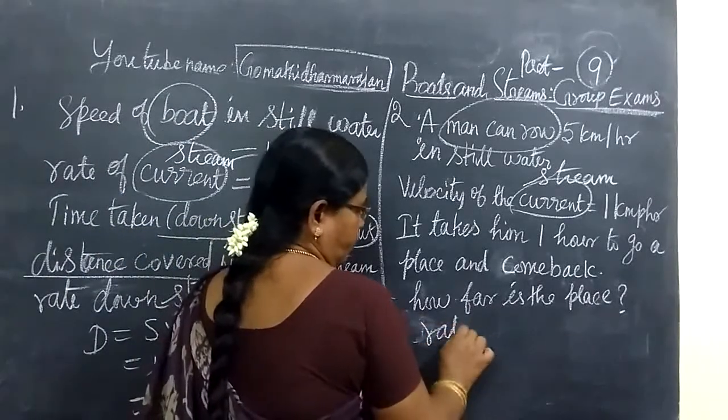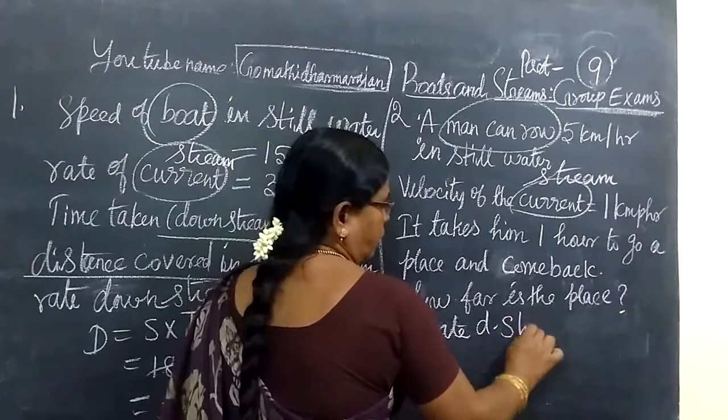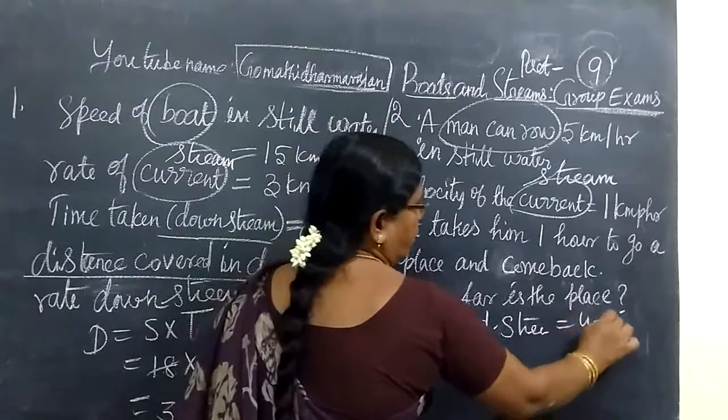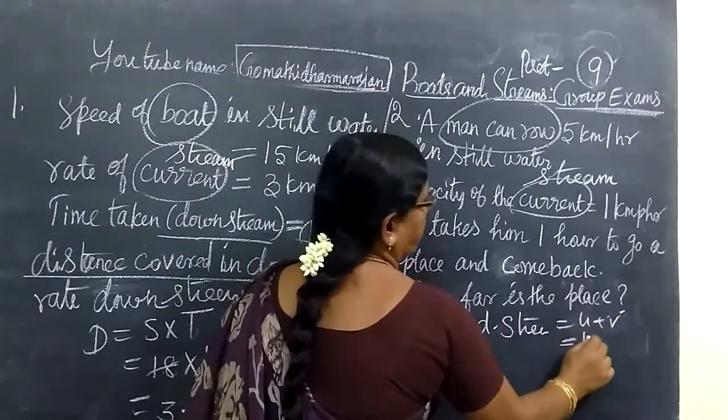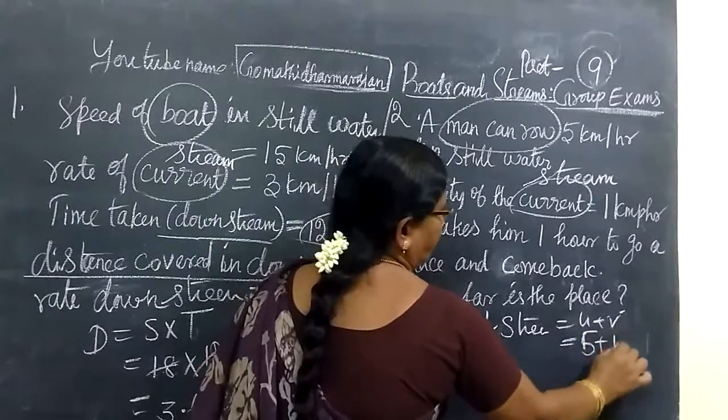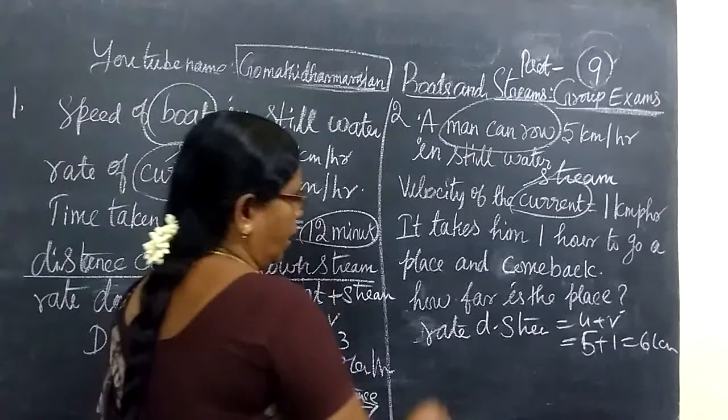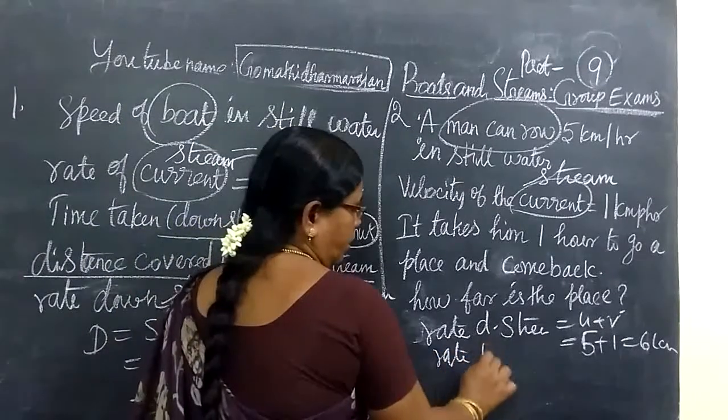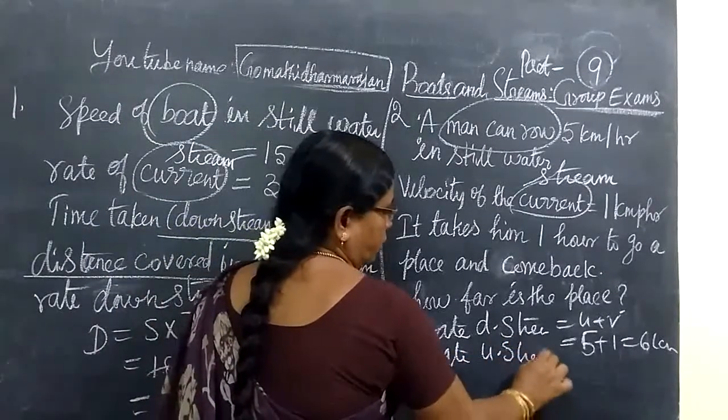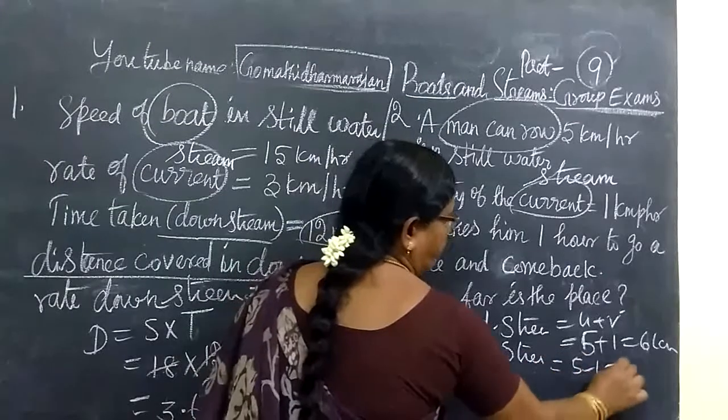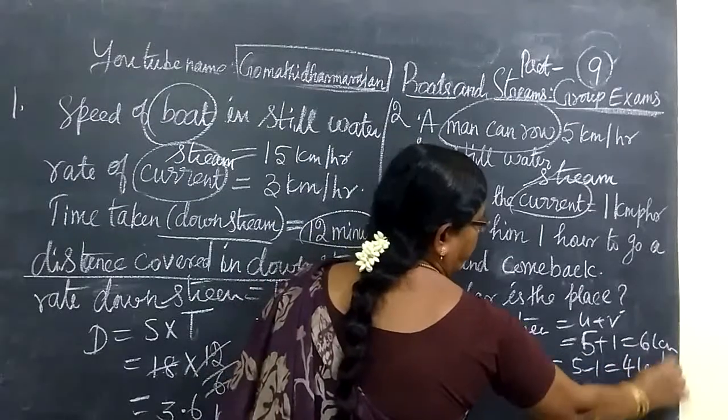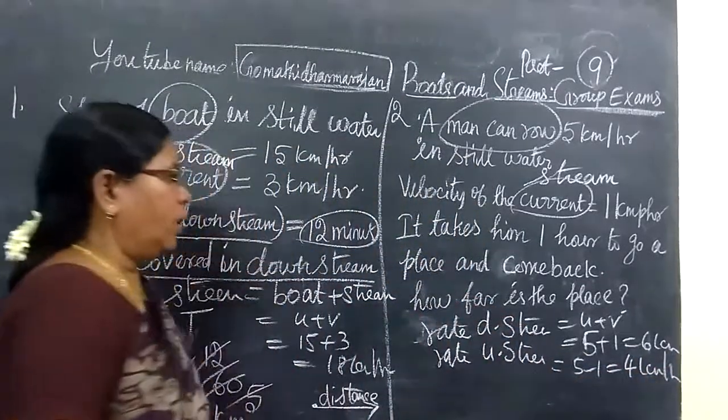So immediately you can write rate downstream equals U plus V equals 5 plus 1 equals 6 km per hour. And here I write rate upstream, this also equals 5 minus 1, 4 km per hour.